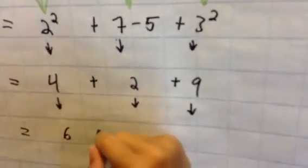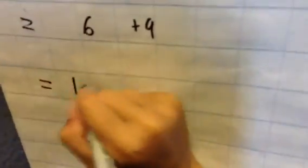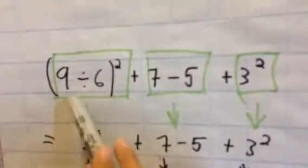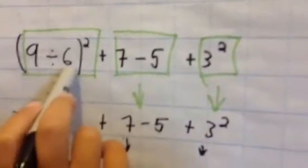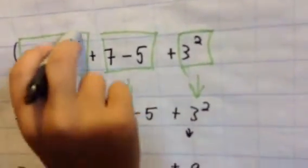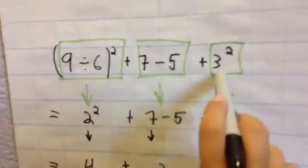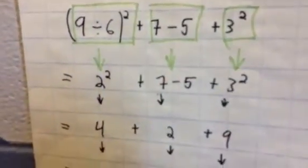So now 4 plus 2 equals 6, plus 9 equals 15. So that's order of operations. The expression 9 divided by 6 in brackets to the power of 2, plus 7 minus 5, plus 3 to the power of 2 equals 15.